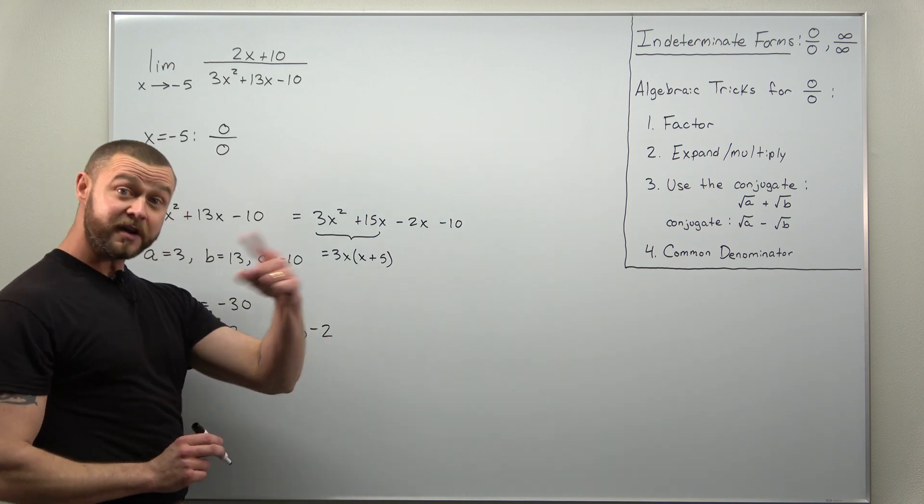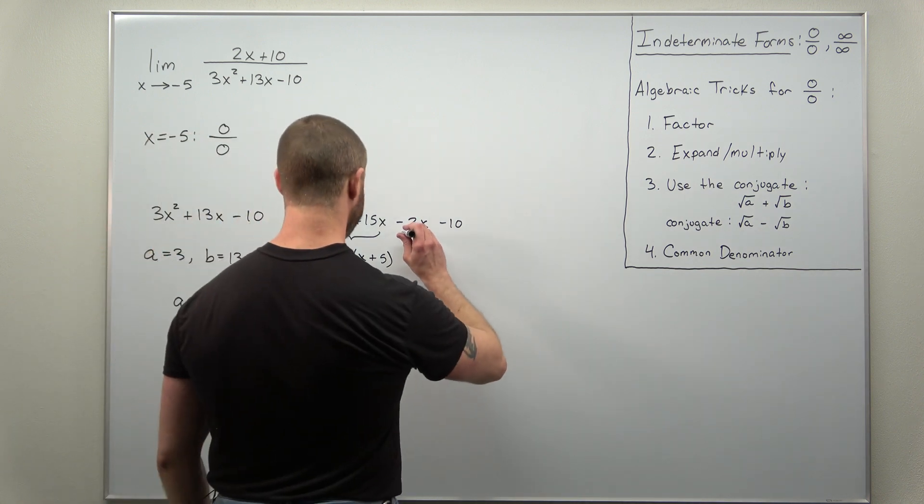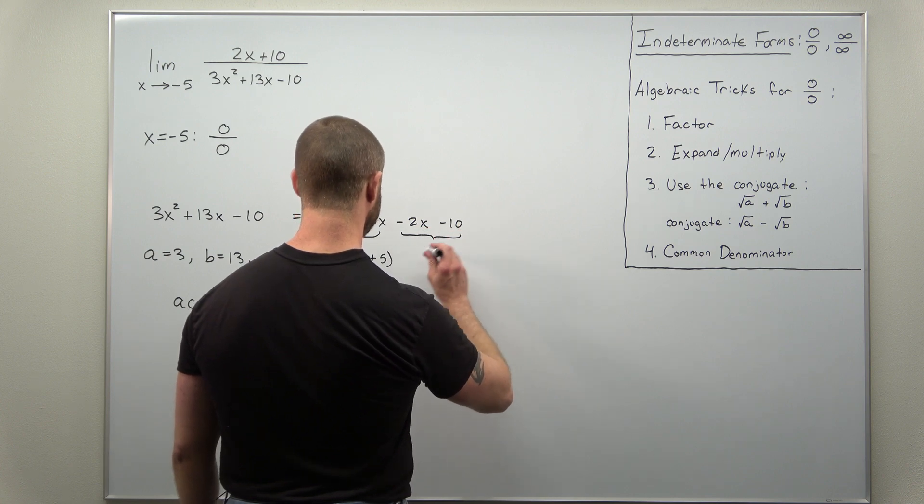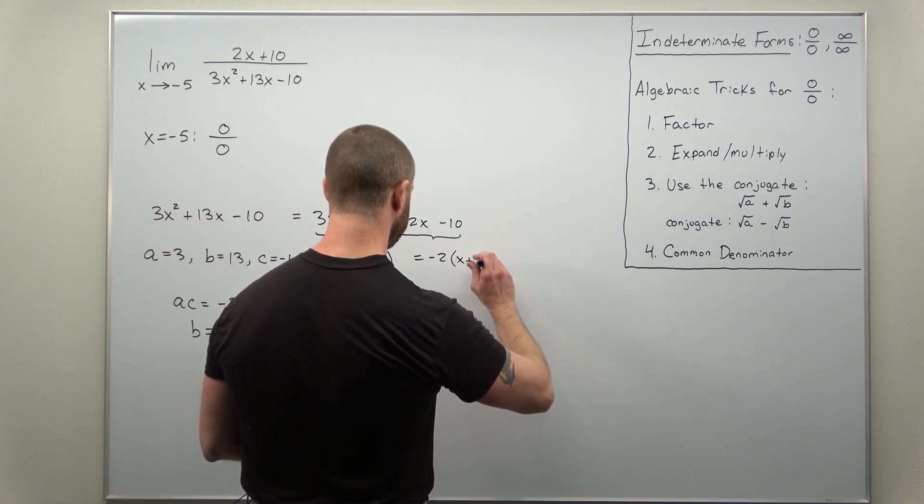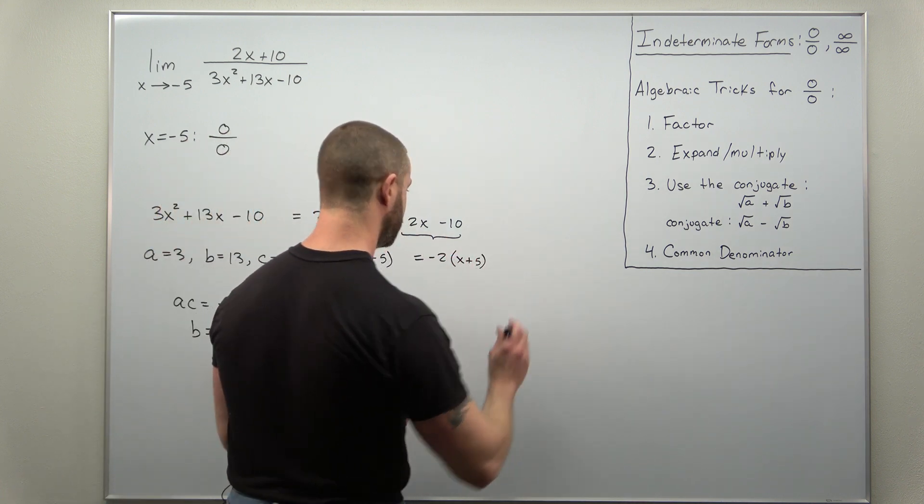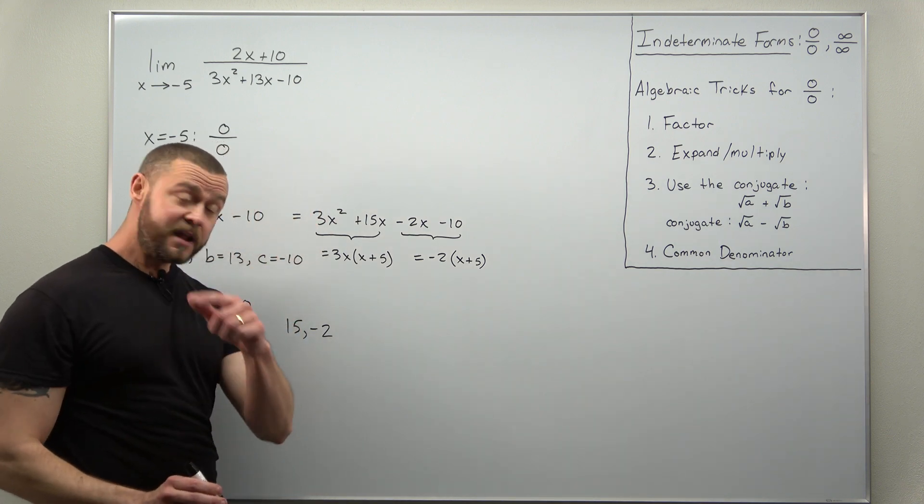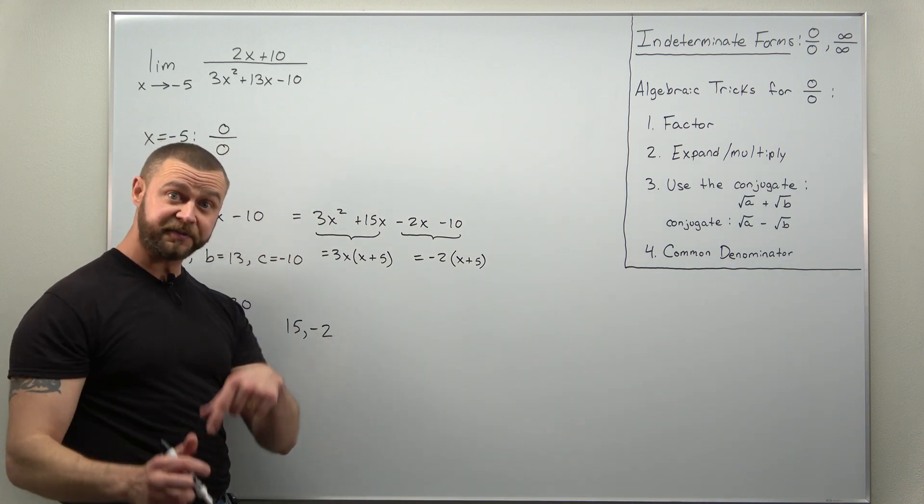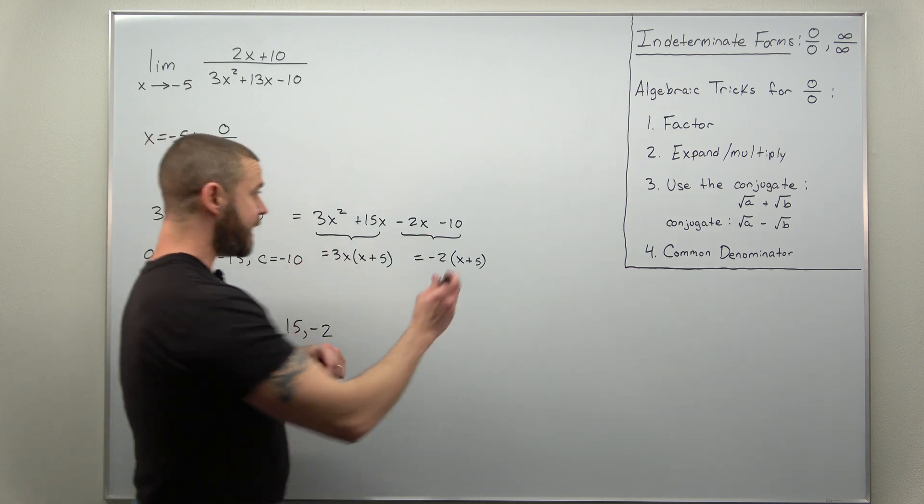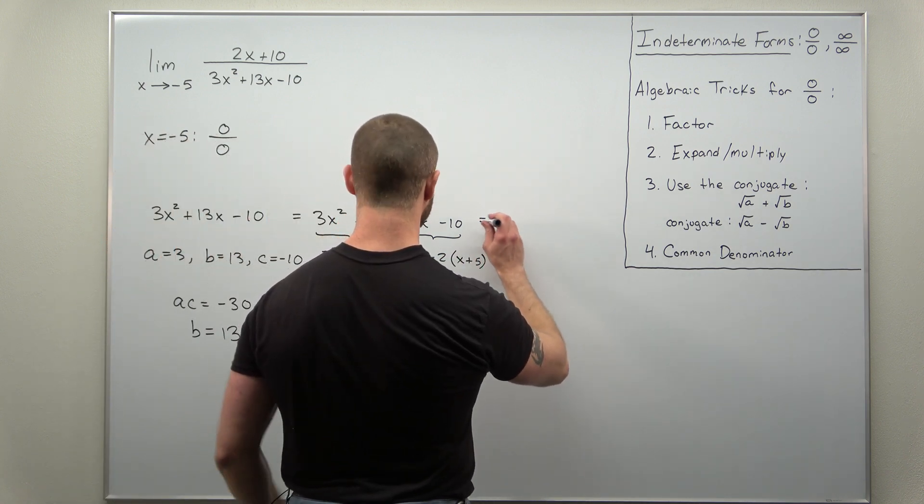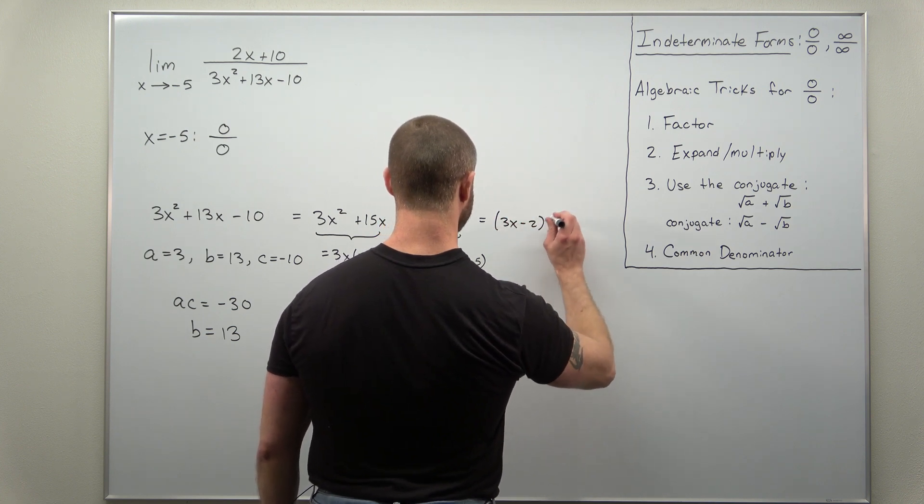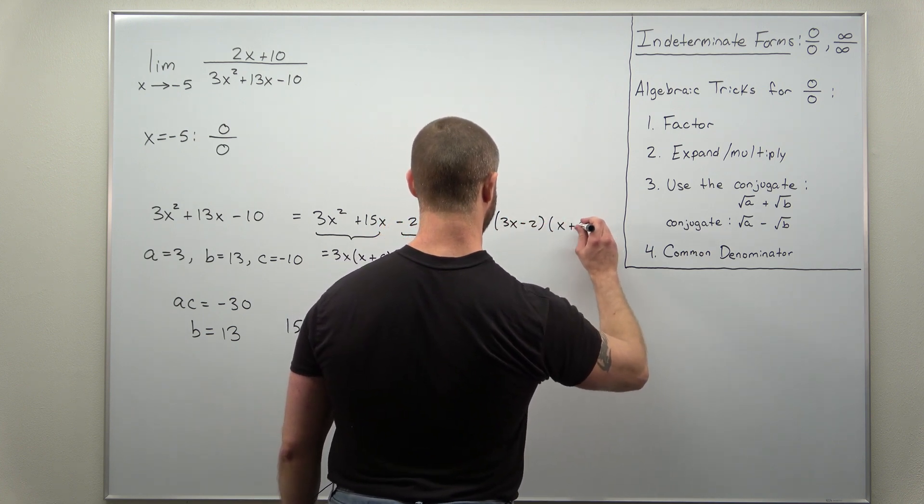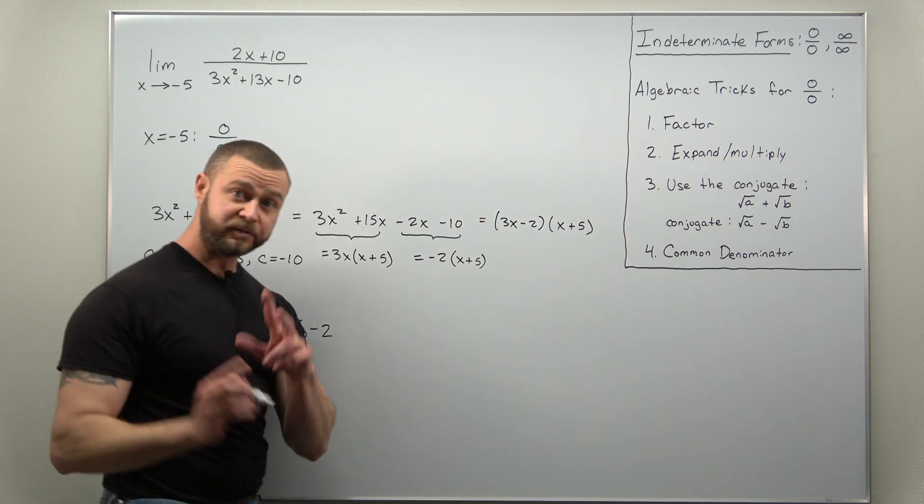And then from your last two terms you can factor out negative 2. And if you do that you're going to be left with x plus 5. And here since they both have a factor of x plus 5 you can factor that out and you get your factorization: 3x minus 2 times x plus 5.